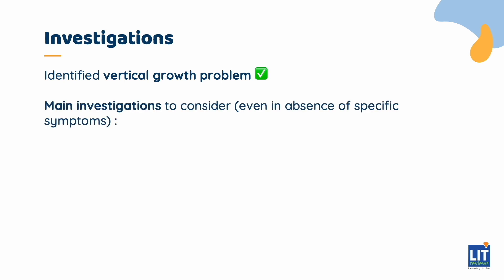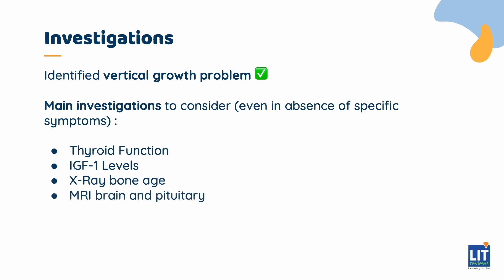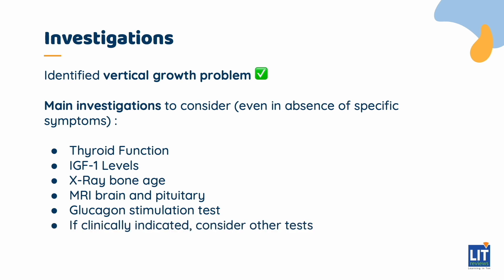This brings you to consider what investigations you need to do to evaluate her further. There are innumerable investigations that can be performed for a child with growth difficulties, but the main ones to consider, even in the absence of specific symptoms or signs, would include thyroid function, insulin-like growth factor 1 (IGF-1) level, X-ray bone age, MRI pituitary, and possibly a glucagon stimulation test, which looks at the patient's ability to produce growth hormone in response to hypoglycemia, allowing identification of growth hormone deficiency. Other tests should be performed if clinically indicated by features in the history and examination.